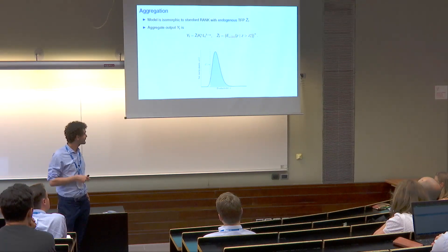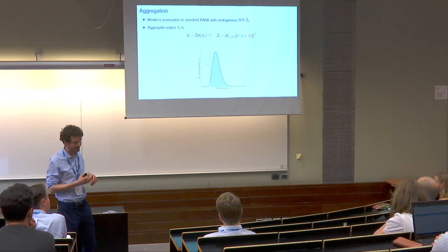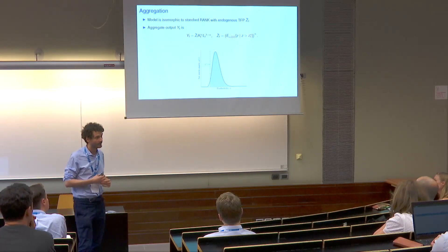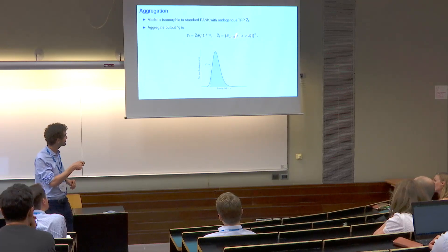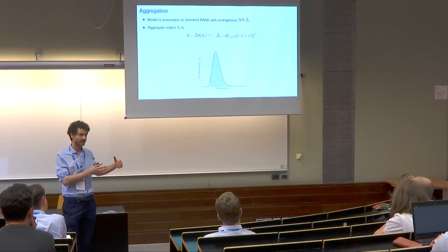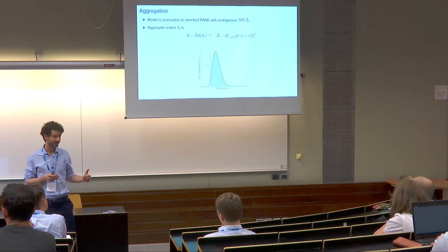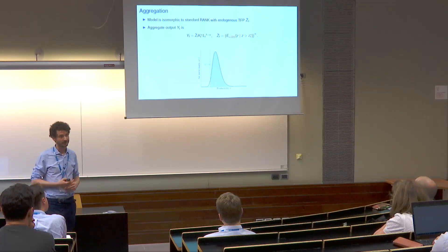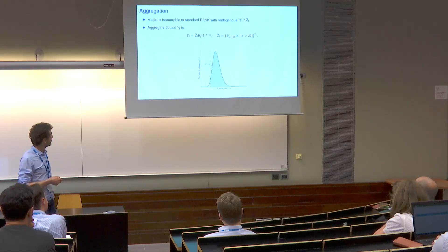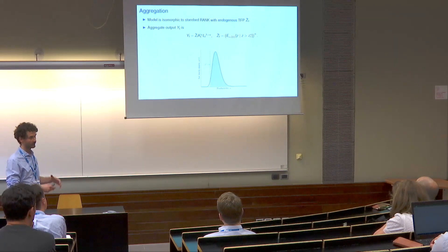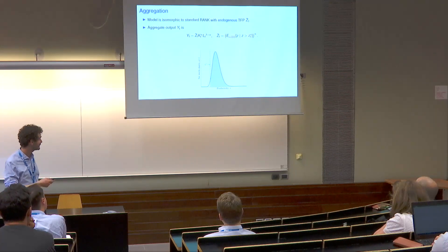Zeta-tilde is the average level of productivity of producing firms, using the net worth share distribution to compute the average, conditional on productivity being above zeta-star — since entrepreneurs below zeta-star don't produce and their contribution to output is exactly zero. If zeta-tilde is below the highest value, we have capital misallocation, because we want all capital in the hands of the most productive firms. So TFP — zeta-tilde — is a measure of capital misallocation.